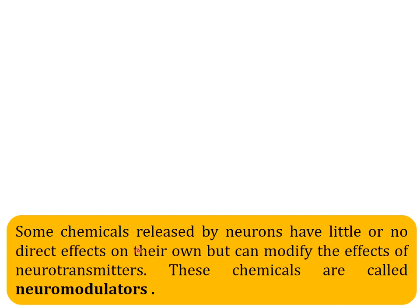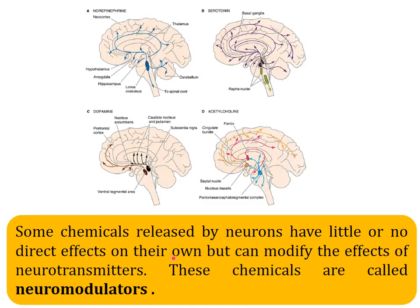Some chemicals released by neurons have little or no direct effect of their own, but can modify the effect of neurotransmitters — these are called neuromodulators. There are four important neuromodulators: norepinephrine, serotonin, dopamine, and acetylcholine.